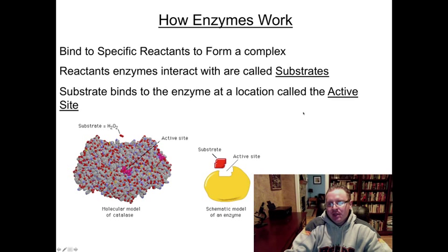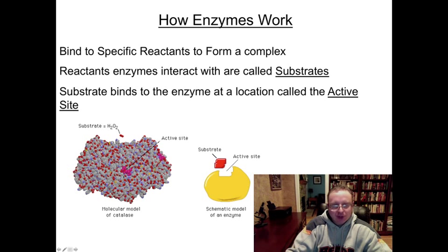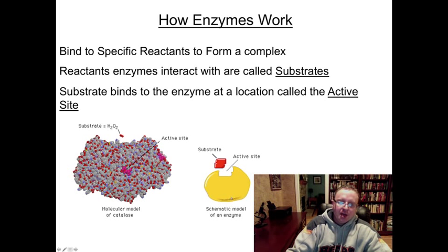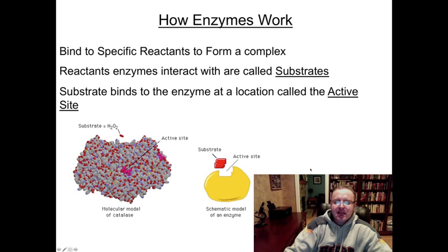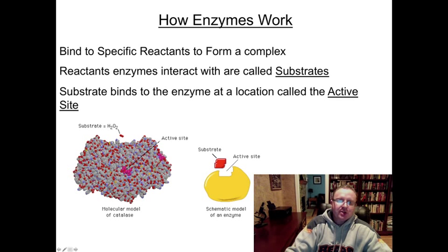The next main idea is active site. The active site is a three-dimensional location on each enzyme where the substrate will bind. Here in the enzyme model, this is where catalase will join together with hydrogen peroxide in this little three-dimensional shape. The schematic model of the enzyme helps you see that a little bit more clearly. The way that the substrate and the enzyme fit together is sometimes referred to as the lock and key model of enzyme action — the substrate and the active site seem to fit together like puzzle pieces.